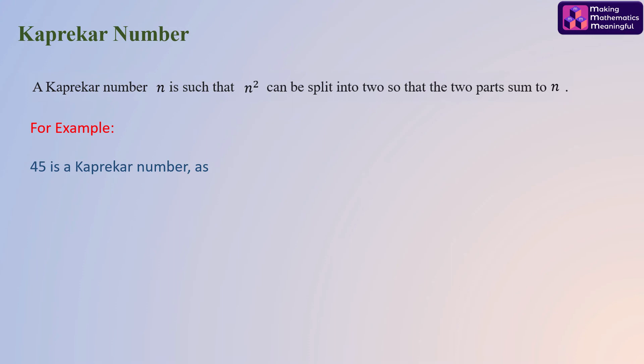For example, 45 is a Kaprekar number because 45² is 2025, and when we split it into two parts — 20 and 25 — and add them, we get the original number 45.